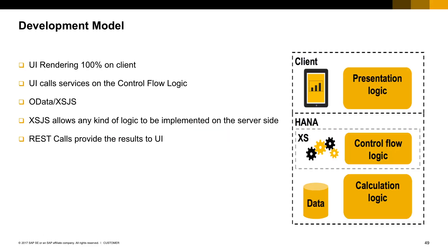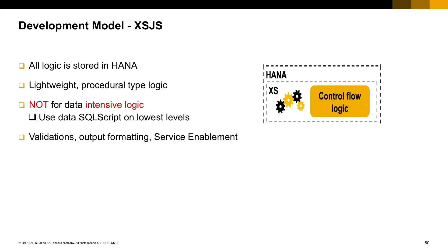The development stack on SAP HANA is split into three layers: the calculation layer, responsible for hosting all the business logic of applications; the control flow layer, responsible for transporting data from the database to the outside world; and the presentation layer, responsible for interacting with the user. Now we're going to focus on the control flow layer.